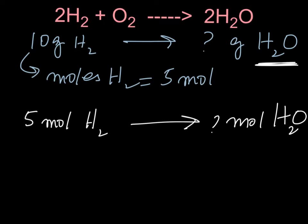So the way we do it, we're going to multiply this by a conversion factor, and please note, what is given here is H2, so we write H2 here. And what we need is H2O, and we write H2O on top. What is given is H2, we put H2 at the bottom.